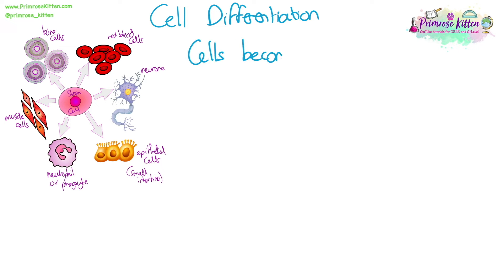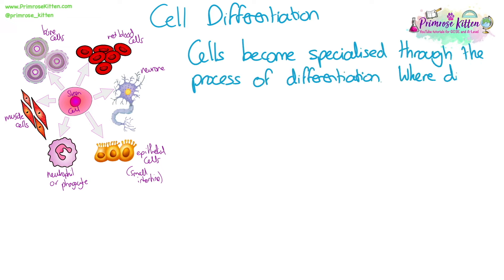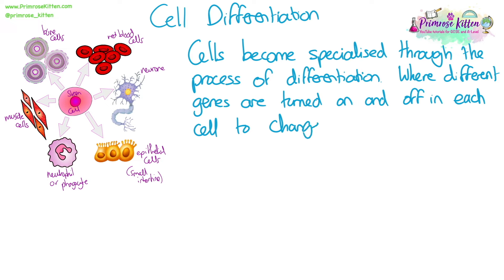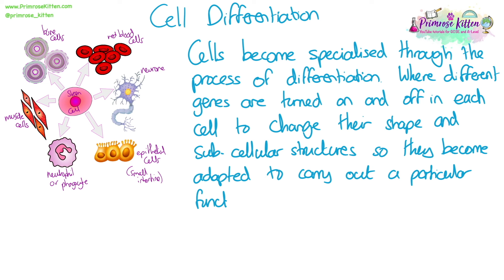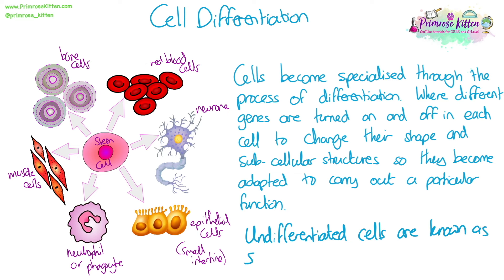Cell differentiation. Cells become specialised through the process of differentiation. This is where different genes are turned on or off in each cell to change their shape or the number of sub-cellular structures that they have. This allows them to become adapted to carry out a particular function. Undifferentiated cells — cells that have not yet differentiated to become specialised — are known as stem cells. A stem cell can go through differentiation to produce red blood cells, neurons, epithelial cells, white blood cells, muscle cells, or bone cells, depending on what that process of differentiation looks like.